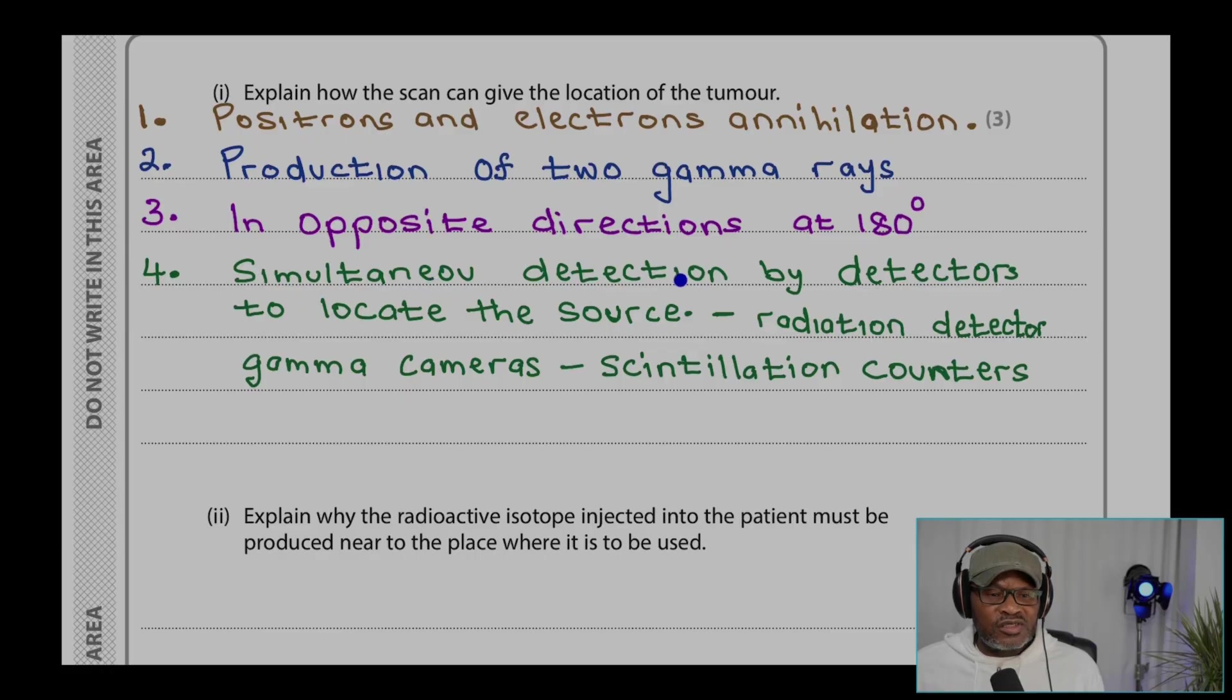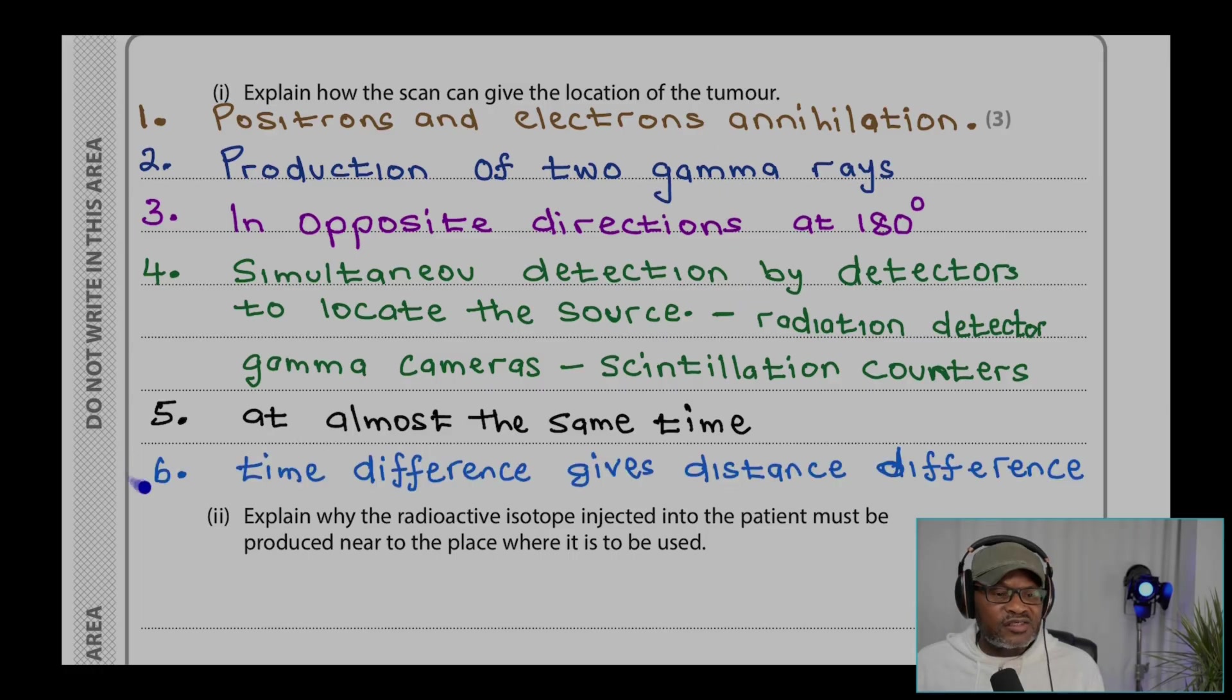Four, simultaneous detection by detectors to locate the source radiation detector. Gamma cameras can be used as scintillation counters. Five, at almost the same time. You can see the gammas are released at the same time, one going in one direction, the other going in the other direction. So that's what this is saying. And six, time difference gives distance difference. As you know, speed is distance over time.